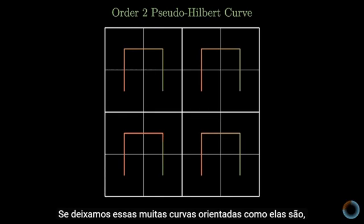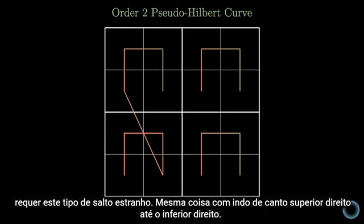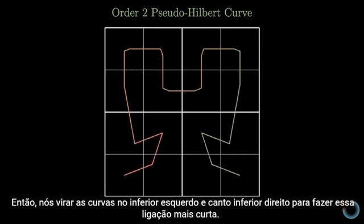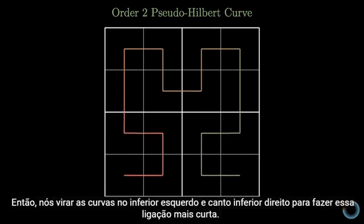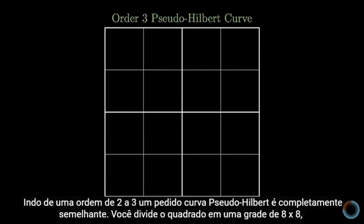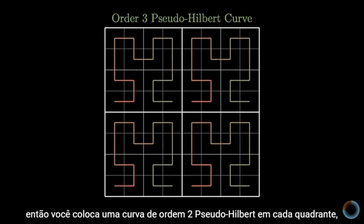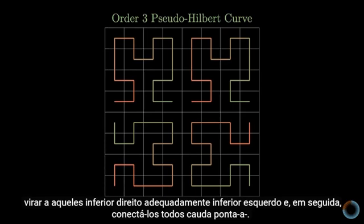If we left those mini curves oriented as they are, going from the end of the mini curve in the lower left to the start of the mini curve in the upper left requires this kind of awkward jump. Same deal with going from the upper right down to the lower right, so we flip the curves in the lower left and the lower right to make that connection shorter. Going from an order two to an order three pseudo-Hilbert curve is completely similar. You divide the square into an eight-by-eight grid, then you put an order two pseudo-Hilbert curve in each quadrant, flip the lower left and the lower right ones appropriately, and then connect them all tip to tail.